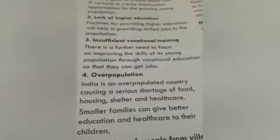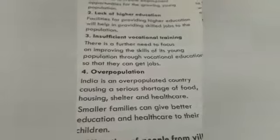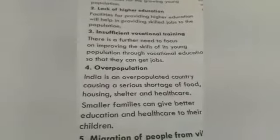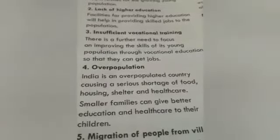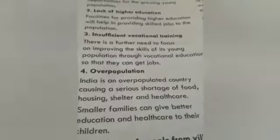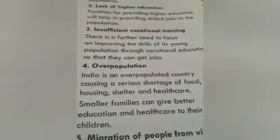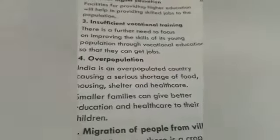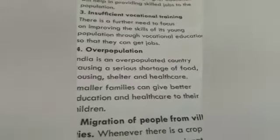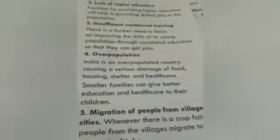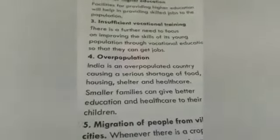The fourth major problem is overpopulation. It is one of the major problems in our country, which leads to shortage of food, housing, shelter, and various health care needs. People who have a large number of children are unable to provide them basic education and other basic amenities, whereas small families are able to give their children proper education. So overpopulation leads to less efficient human resources.